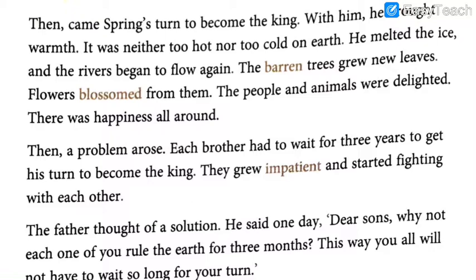All the brothers were very happy. One by one they ruled. When Summer ruled, the climate was very hot because Summer was hot-headed. When Autumn ruled, the climate was a bit calmer, and the trees shed their worn-out leaves. In Winter, it was very cold with no feelings — the earth was full of snow, and people felt very uncomfortable, just as they did in summer. At first, each brother ruled for 12 months.